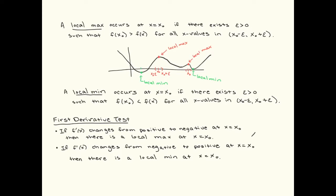The first derivative is positive, so the function is increasing, and then it changes to be decreasing. There's a local max right at the point where the first derivative changes from positive to negative. Similarly, if the first derivative changes from negative to positive, there's going to be a local min at that point where it changes.